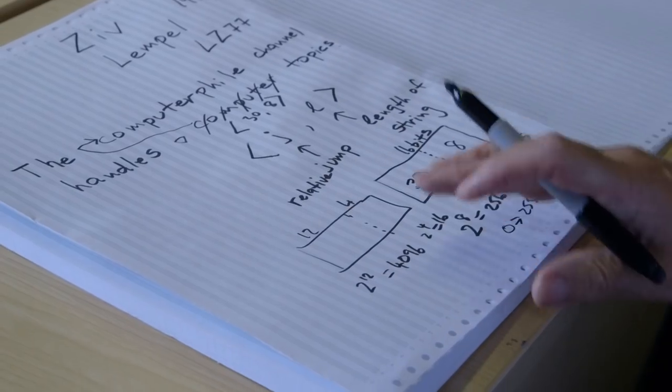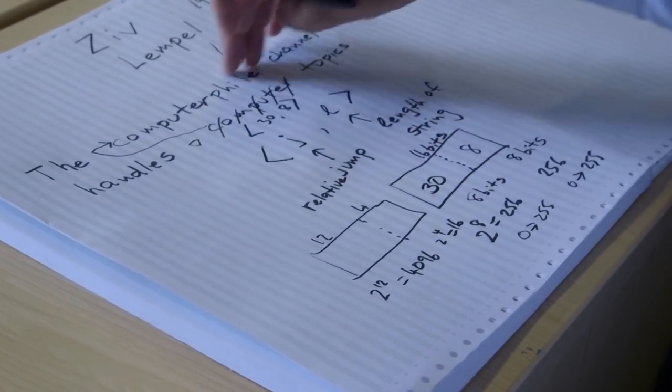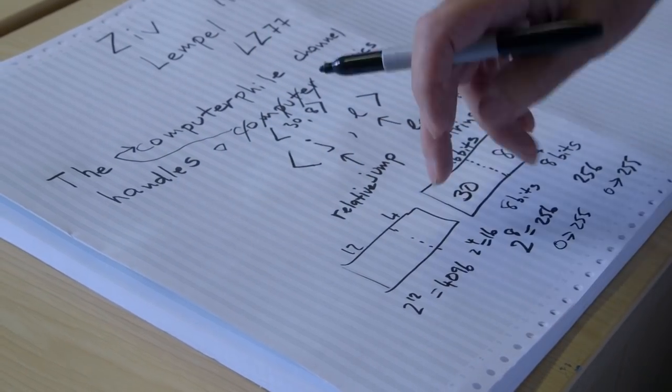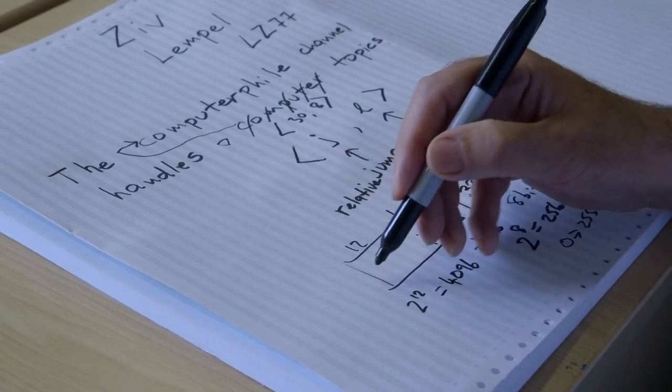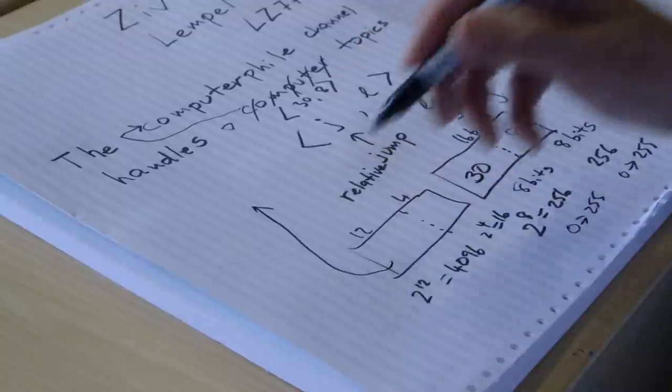You can encode in here a string that is anything, if you like, from 1 to 16 bytes long. But you can have a relative backward jump 4096 characters. That is a pretty good trade-off.